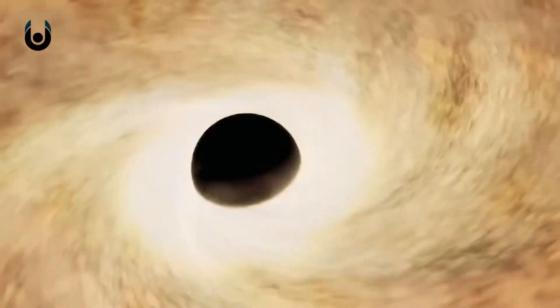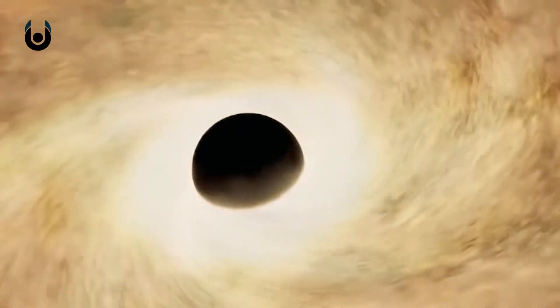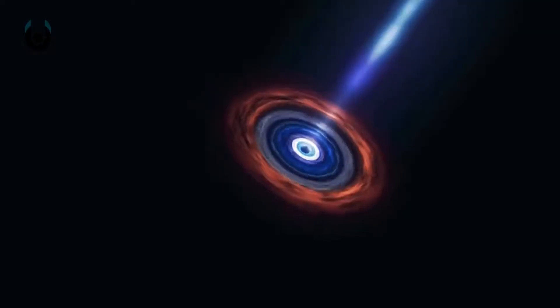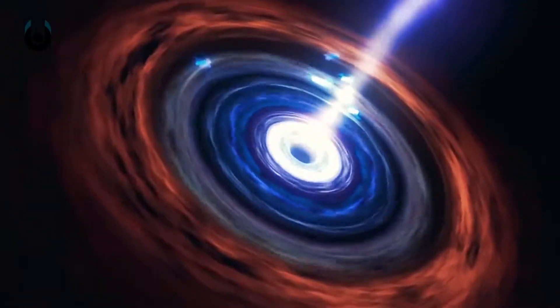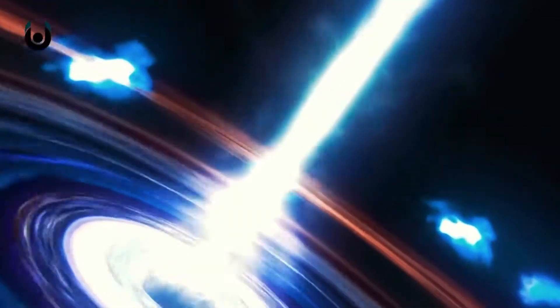As it feeds, gas swirls around it at incredible speeds and forms an insanely bright hot orbiting disk. And if the black hole is swallowing a large amount of material, this feeding is accomplished by gigantic jets of gas. These are called quasars. They are essentially fueled by the black holes they orbit.